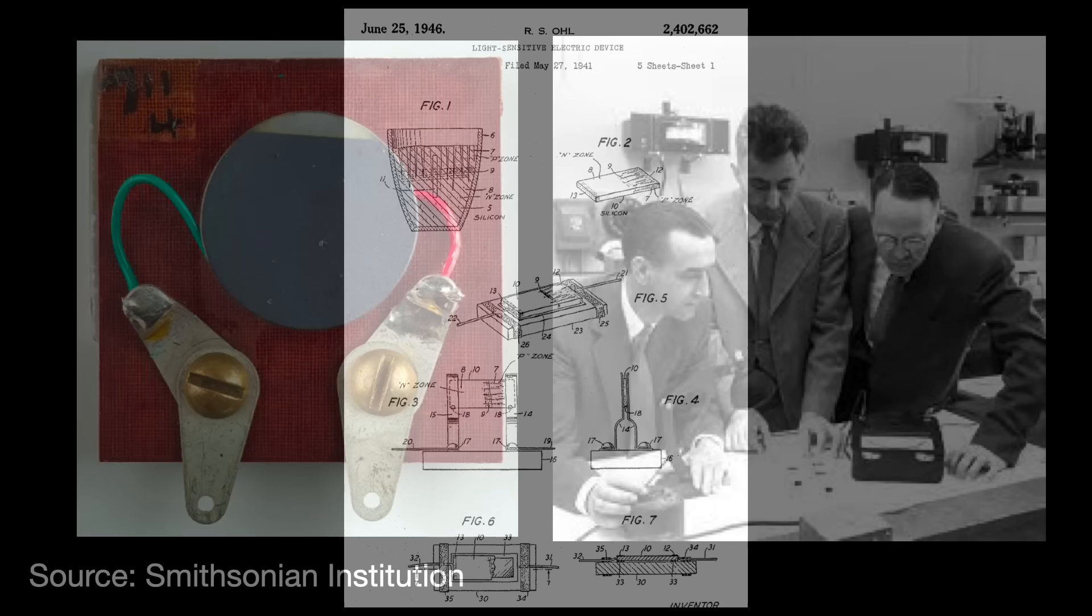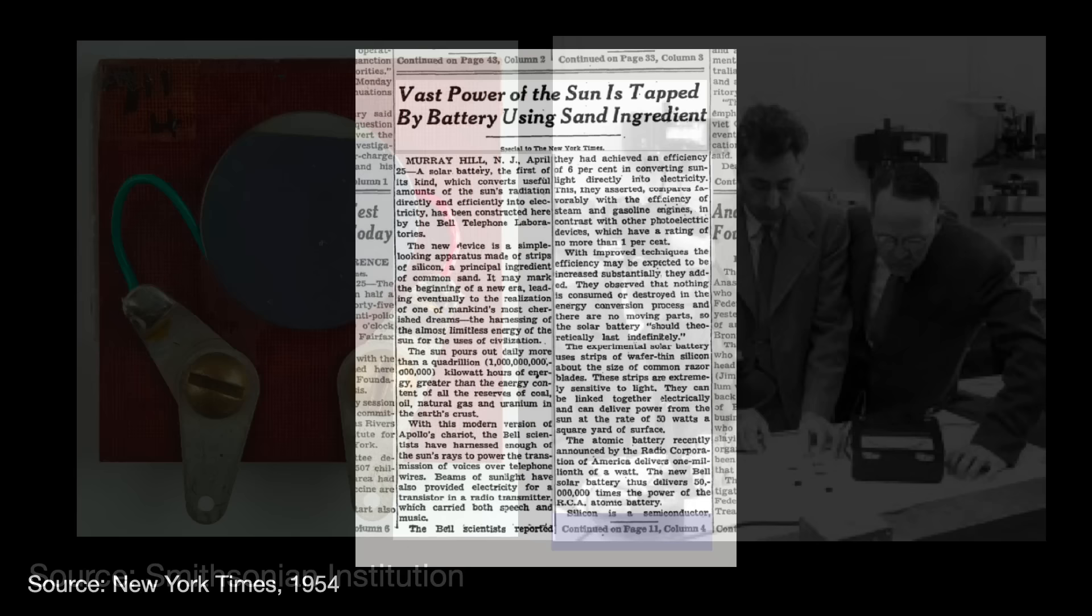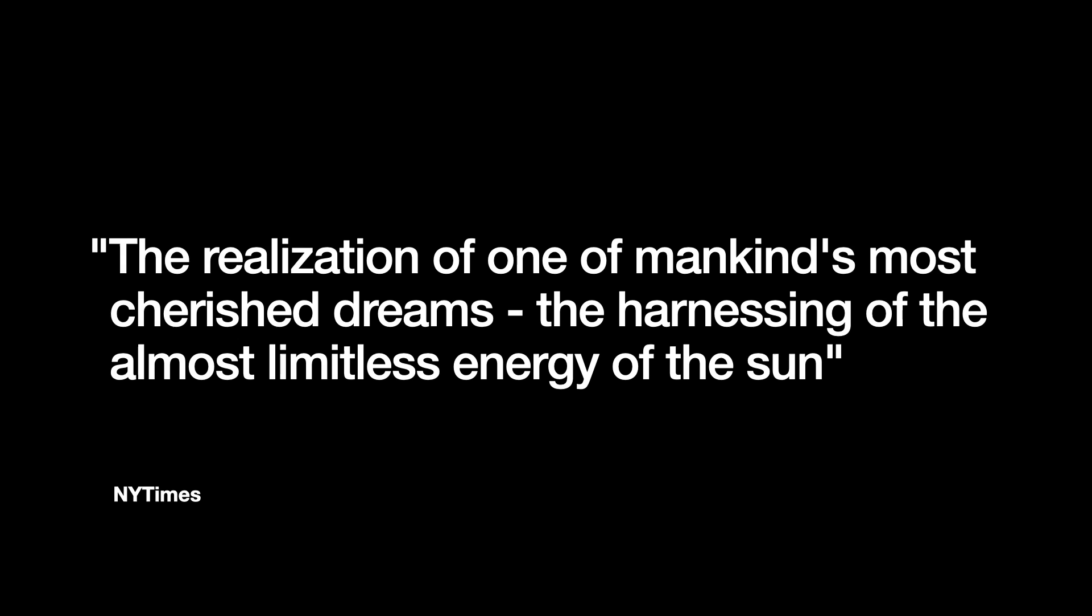Nine years later in 1954, another team at Bell Labs would create the silicon solar cell. The New York Times said what everyone was thinking at the time: the realization of one of mankind's most cherished dreams, the harnessing of the almost limitless energy of the sun.